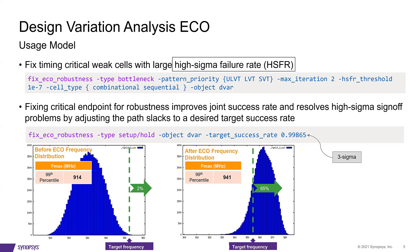The two histograms at the bottom capture pre- and post-ECO frequency distributions. Notice the effect of DVA-ECO. The weak cells on the left tail end of the pre-ECO histogram are swapped, and it moves the complete frequency distribution towards the right. That's the 99th percentile frequency.